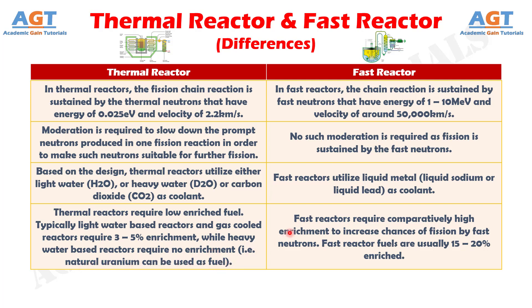Whereas, fast reactors require comparatively high enrichment to increase chances of fission by fast neutrons. Fast reactor fuels are usually 15 to 20 percent enriched.